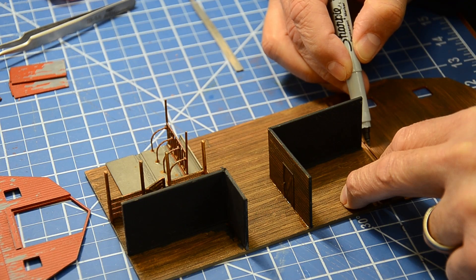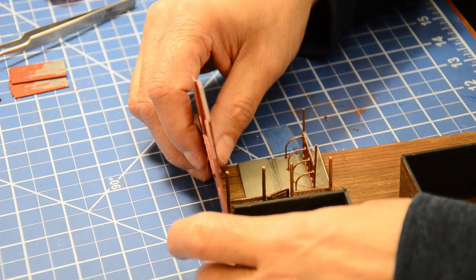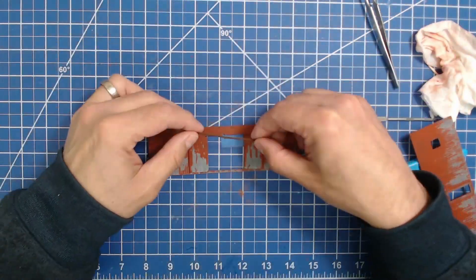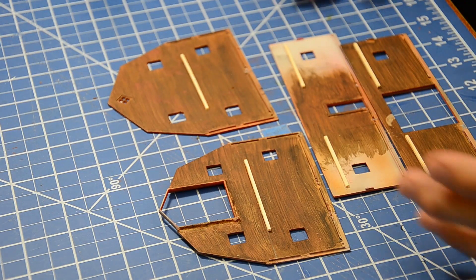The walls were prepped for assembly. First, they had their alignment tabs trimmed to fit the new interior features. Then the main doors were assembled. And last, supports for the haymow floor were added using 1/16th inch square basswood.